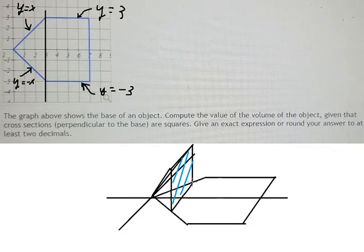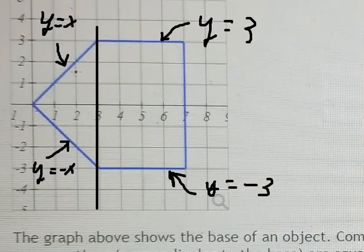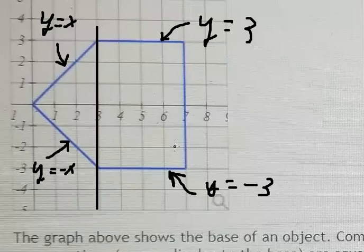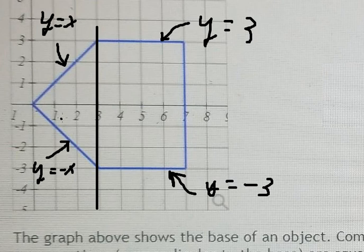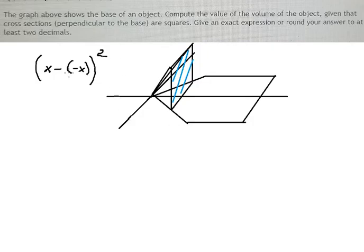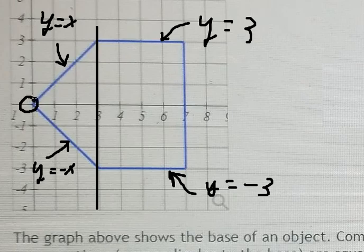And y equals negative 3. So we see that the side of the square is x minus negative x. One side should equal the top — that is the side length going up — so that means this one minus this one. Because the cross section is a square, the area is side times side, so we put everything to the power of 2. That gives us the integral from 0 to 3 of (x minus negative x) squared.